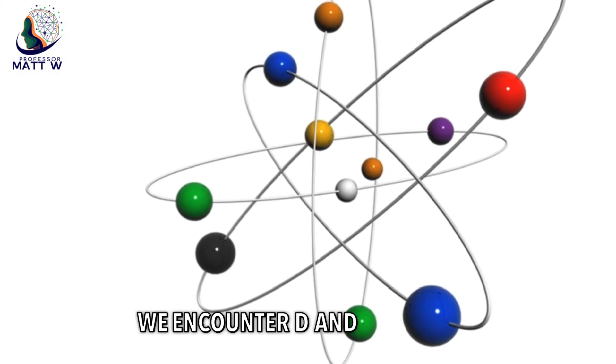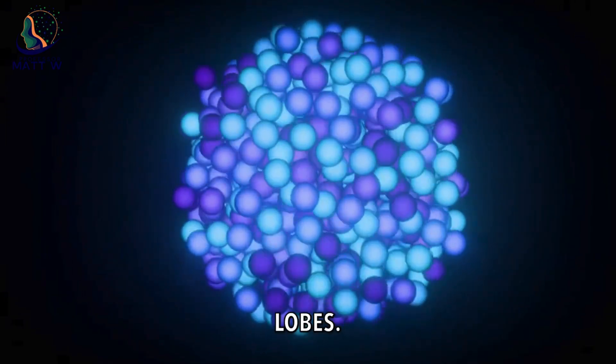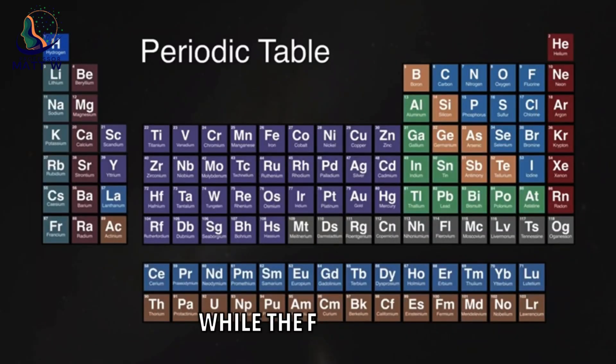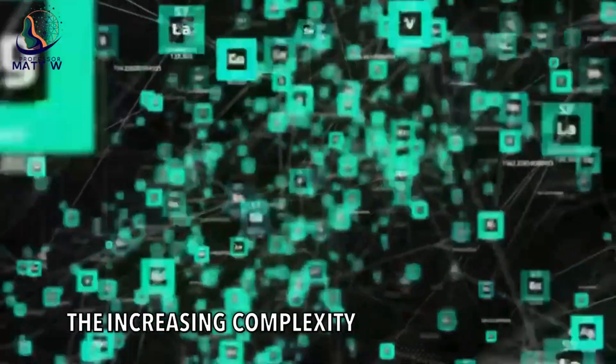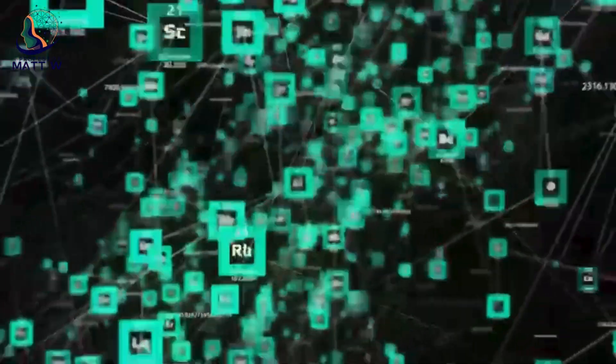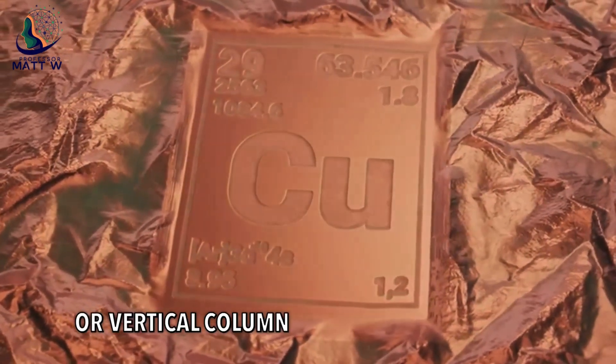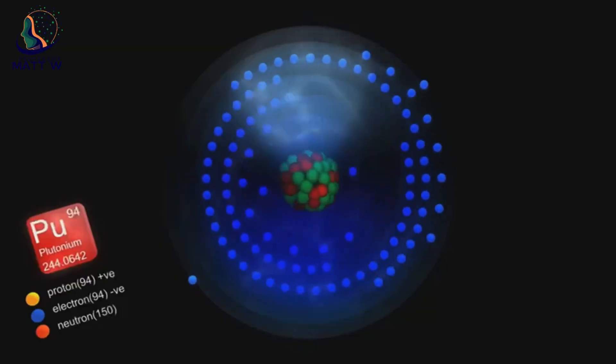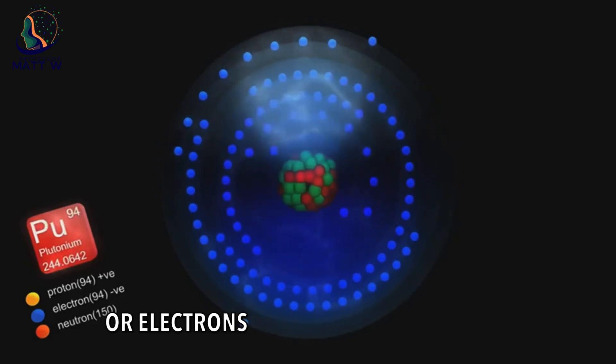These orbitals have even more complex shapes, with multiple lobes. The d orbitals first appear in the transition metals, while the f orbitals are found in the lanthanides and actinides. The increasing complexity of these orbitals explains the arrangement of elements in the periodic table. Elements in the same group or vertical column have similar chemical properties, because they have the same number of valence electrons, or electrons in the outermost shell.